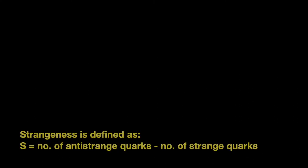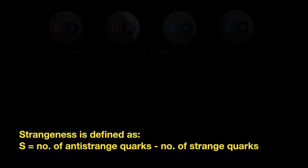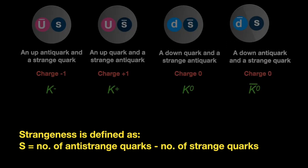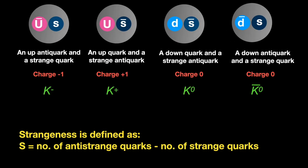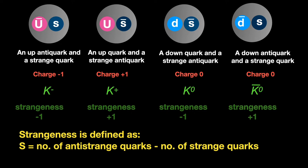Strangeness is defined as the number of anti-strange quarks minus the number of strange quarks. So, looking at our four examples, the first has one strange quark, no anti-strange. So it's zero minus one, giving a strangeness of minus one. And taking the second, it has an anti-strange. So it's one minus zero, which is a strangeness of one.